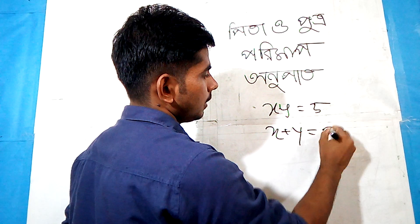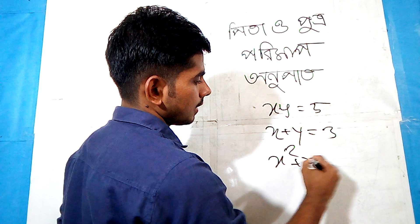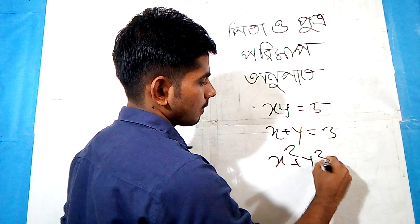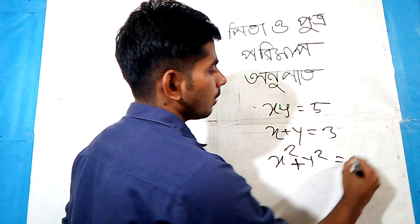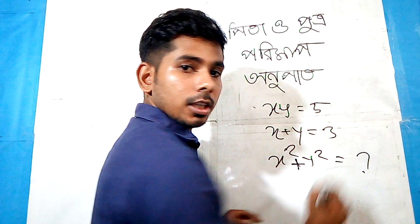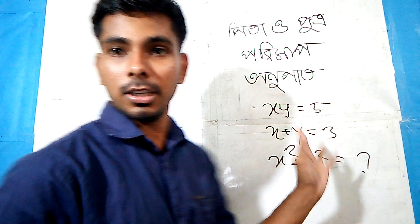Then I should say x plus y equals 3. Then x squared plus y squared plus something. This is something that we have to do.